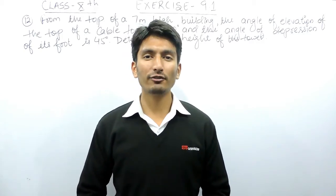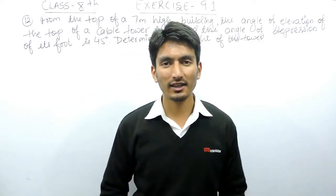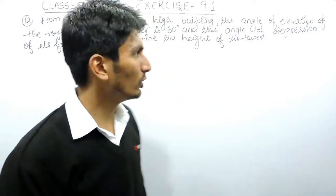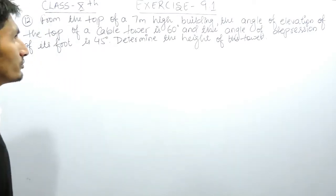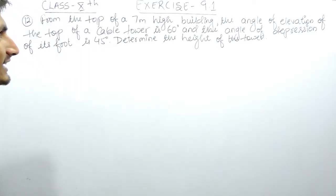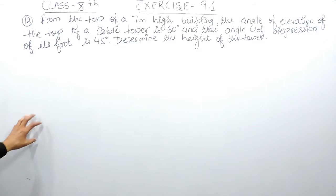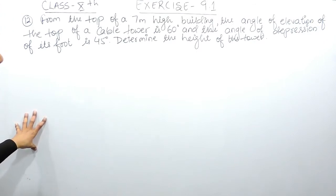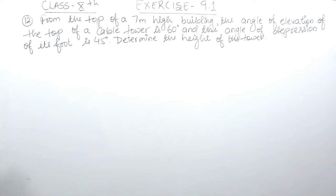Hello everyone, we are from True Maths and in this video we are going to solve question number 12 of exercise 9.1. The question says: from the top of a 7-meter high building, the angle of elevation of the top of a cable tower is 60 degrees and the angle of depression of its foot is 45 degrees.